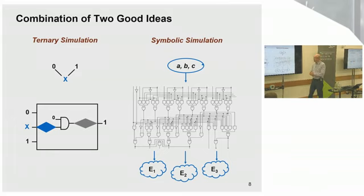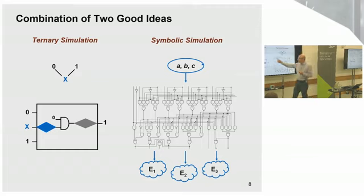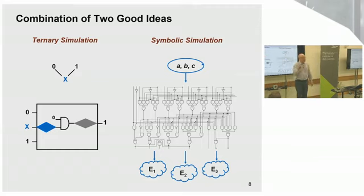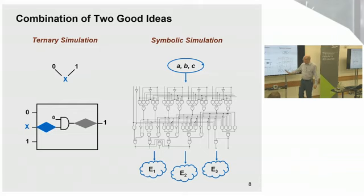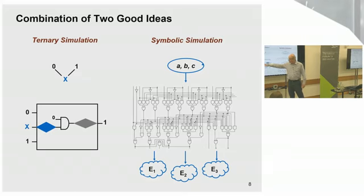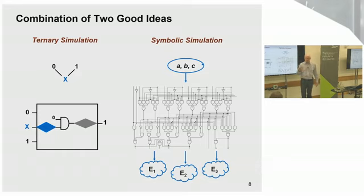STE is more than just forward simulation — it combined two good ideas. One is ternary simulation: simulation with an unknown value X as well as zeros and ones. There's an information ordering with X at the bottom. If you have an X on a circuit node, it means you don't know whether it's a zero or a one — not a don't-care. You have no knowledge. This abstraction mechanism allows you to step away from certain knowledge about circuit node values.